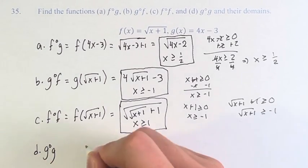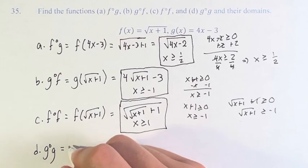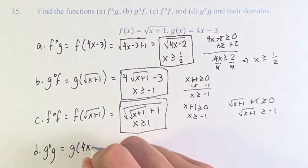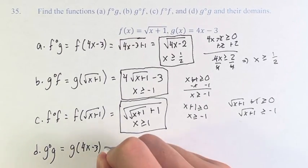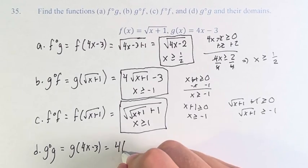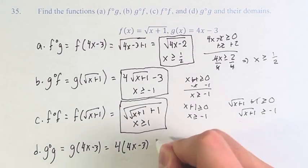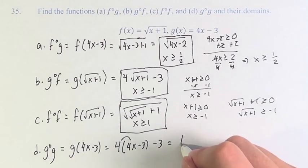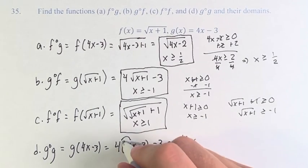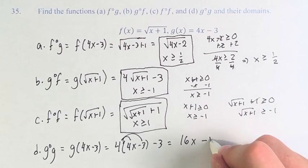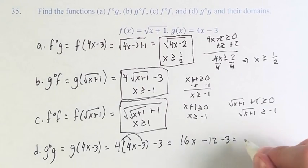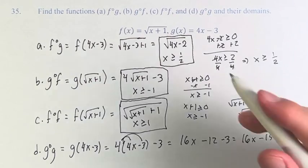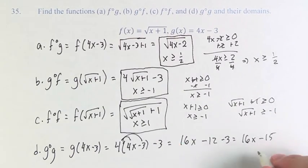And finally, g of g. This is g of 4x minus 3, so we're plugging in 4 times 4x minus 3, minus 3. We can just simplify this: 4 times 4 is 16x, and 4 times negative 3 is minus 12, minus 3. So this is 16x minus 15. There's no square root, there are no restrictions, so the domain is all real numbers.